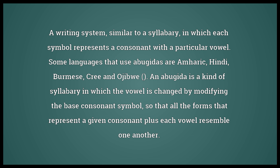An Abugida is a kind of syllabary in which the vowel is changed by modifying the base consonant symbol, so that all the forms that represent a given consonant plus each vowel resemble one another.